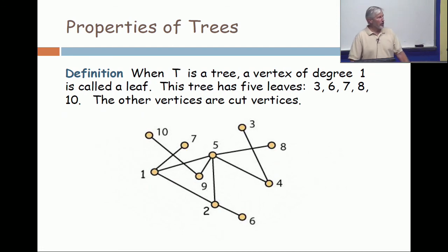Properties of a tree. When T is a tree, a vertex of degree one is called a leaf. This tree has five leaves: three, six, seven, eight, and ten. The other vertices are cut vertices.